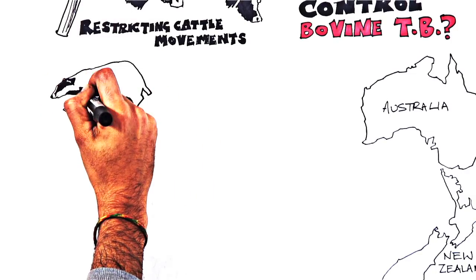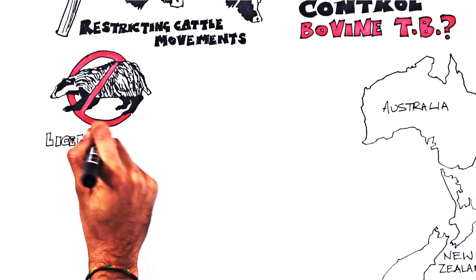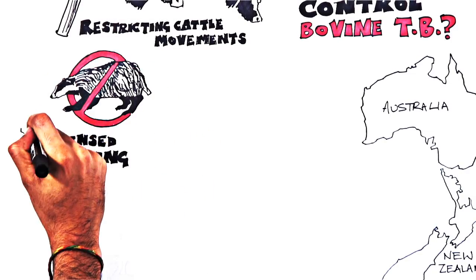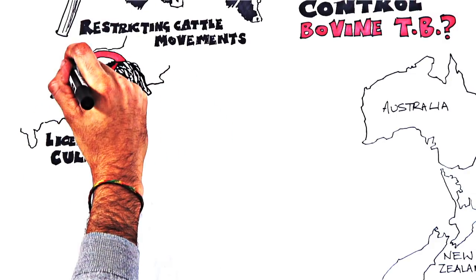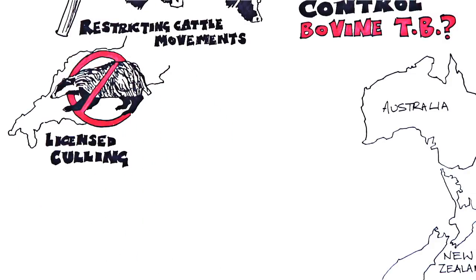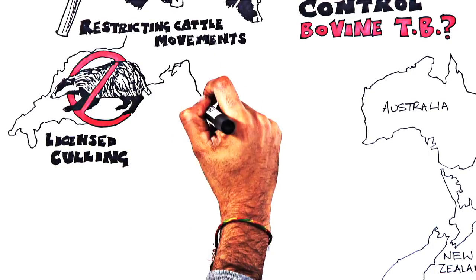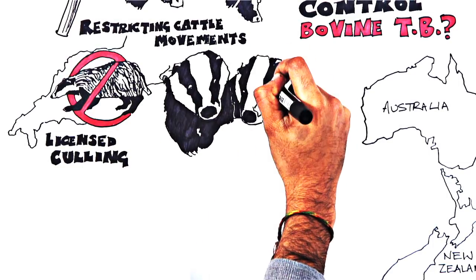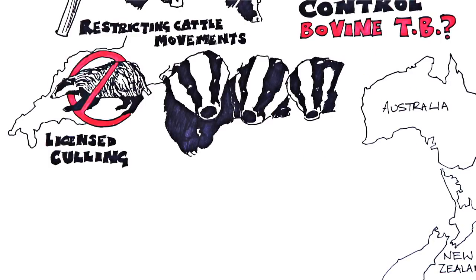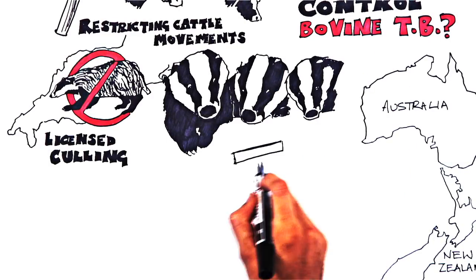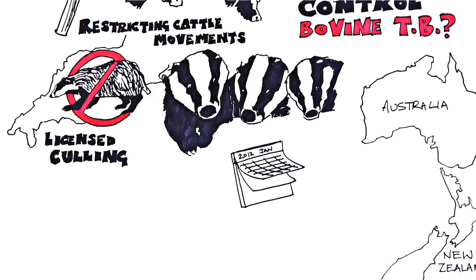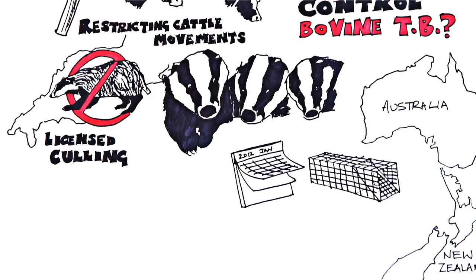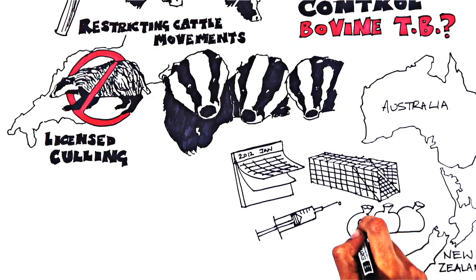And we're starting to tackle infection in badgers with licensed culling, which has been shown to reduce bovine TB in cattle if applied over large areas. We also have a badger vaccine, though this doesn't protect badgers that are already sick, which can go on to infect other animals. And vaccination must be applied every year, which, with the cost of catching and injecting badgers, can be very expensive.